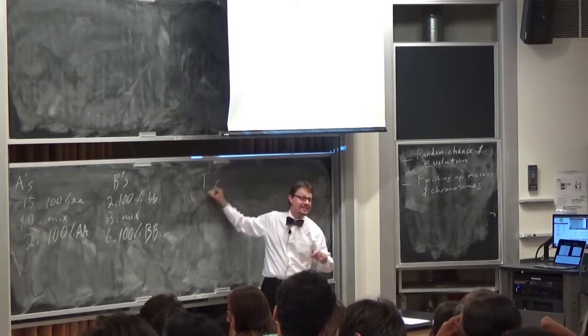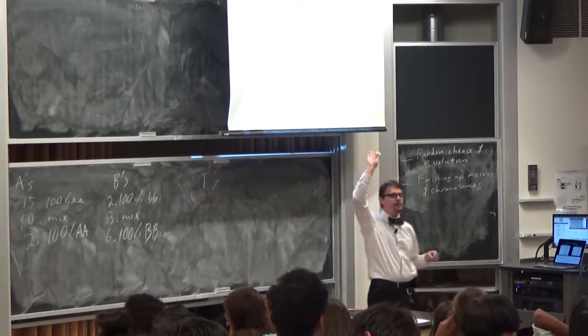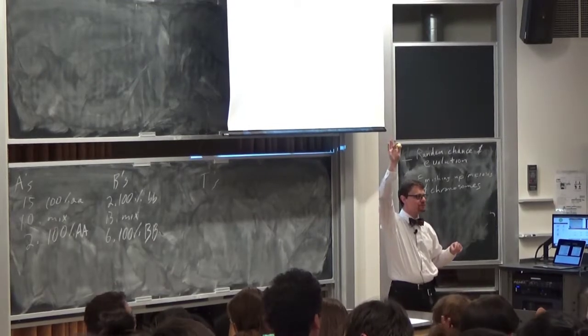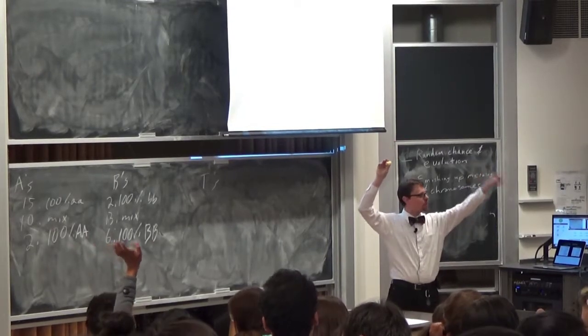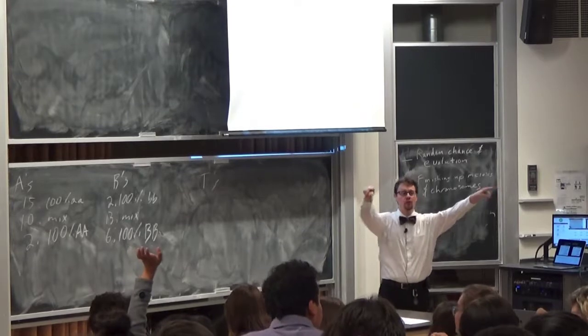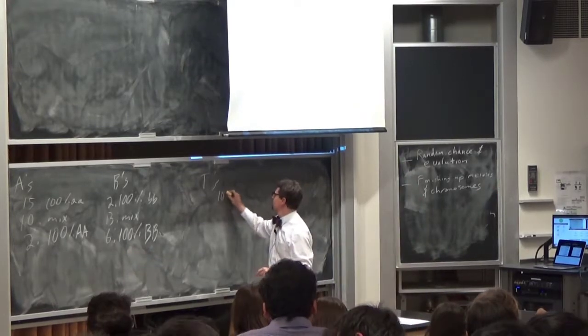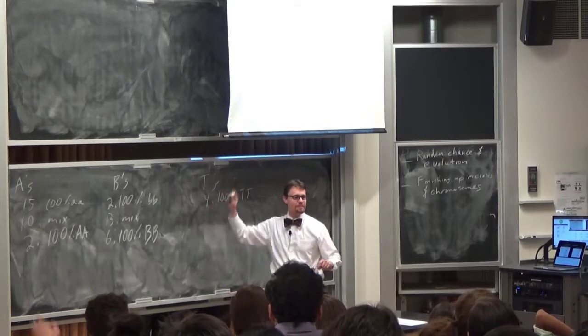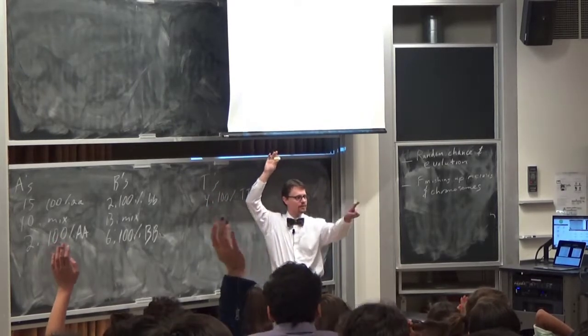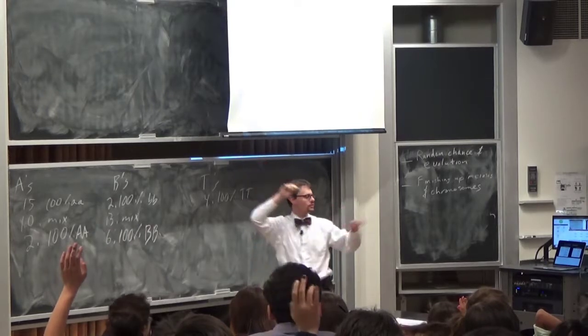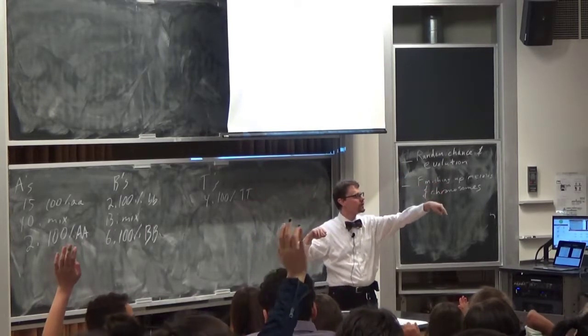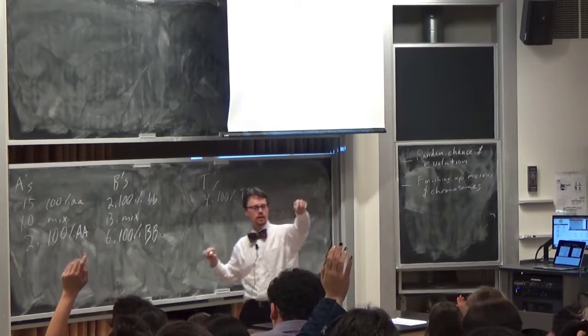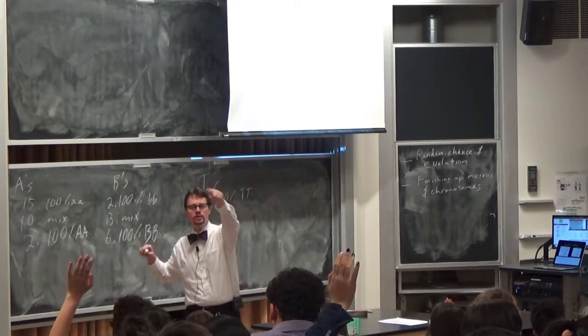Okay, and then lastly for the T's. How many people ended up all dominant? Everybody's homozygous tasters. 1, 2, 3, 4. How many people ended up with some mix in the T's? 1, 2, 3, 4, 5, 6, 7, 8, 9, 10, 11, 12, 13, 14, 15.